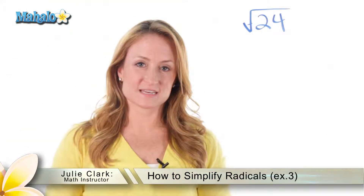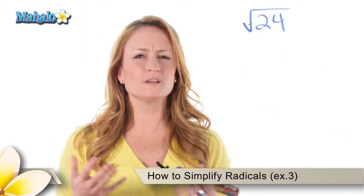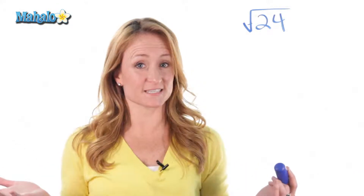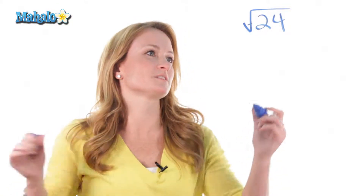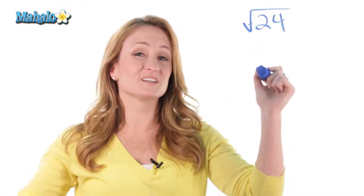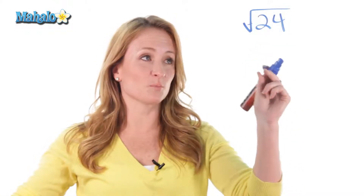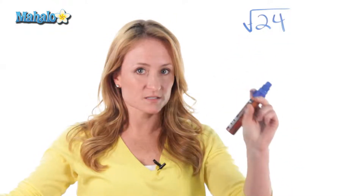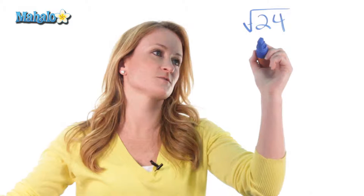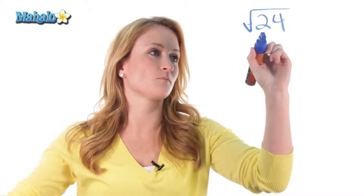Hey guys, it's Julie with Mahalo.com. Now we just learned how to simplify a radical, but what if the problem doesn't work out as nicely as that last one did? Let's do another one. So we have the square root of 24. We're going to do the same thing and break it down into the smallest factors we possibly can.